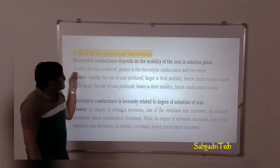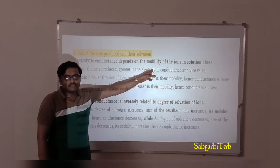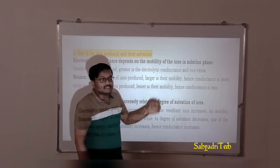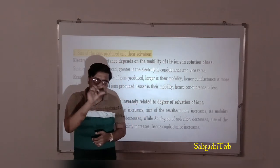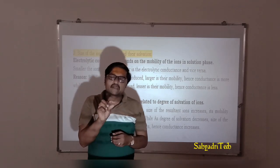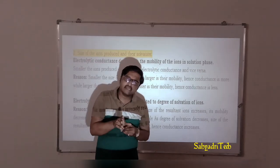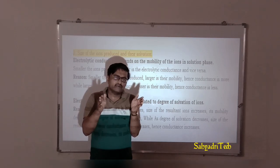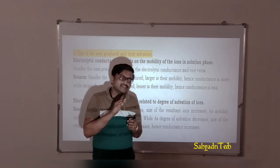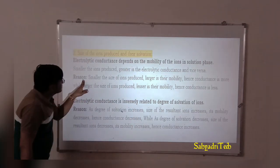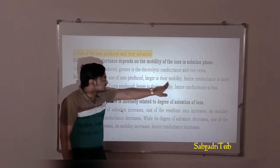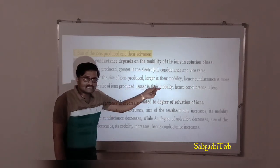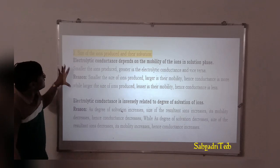The reason: smaller the size of ions produced, larger is their mobility. If size is very small, mobility is very high, so it conducts more. On the other hand, if size of the ions produced is very large, mobility is very less, therefore conduction is also less. So: smaller the size of ions produced, larger is the mobility, hence conduction is more. Larger the size of ions produced, lesser is their mobility, hence conduction is less.